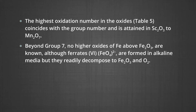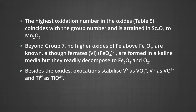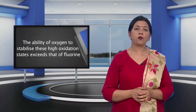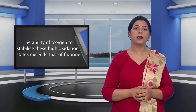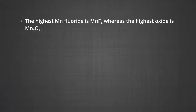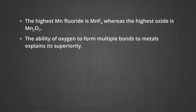Beyond group 7, no higher oxides of iron above Fe2O3 are known. Although ferrates are formed in alkaline media, they readily decompose into ferric oxide and oxygen. Oxo cations stabilize vanadium in +5 as the oxovanadium cation and titanium in +4 as titanium oxide. The ability of oxygen to stabilize high oxidation states exceeds that of fluorine — the highest manganese fluoride is MnF4, whereas the highest oxide is Mn2O7.